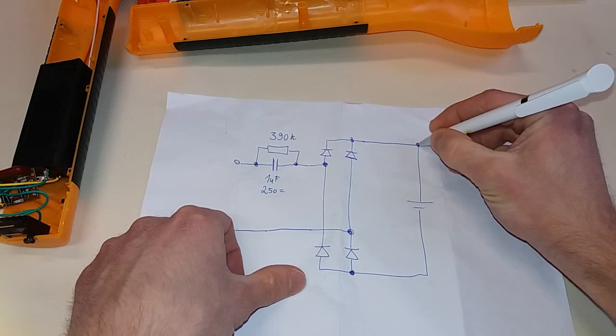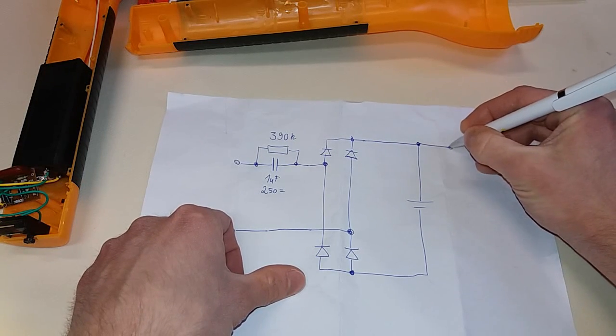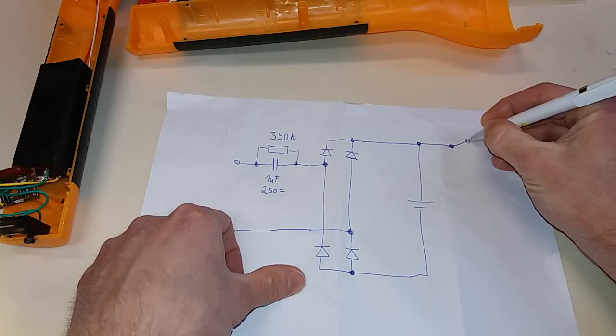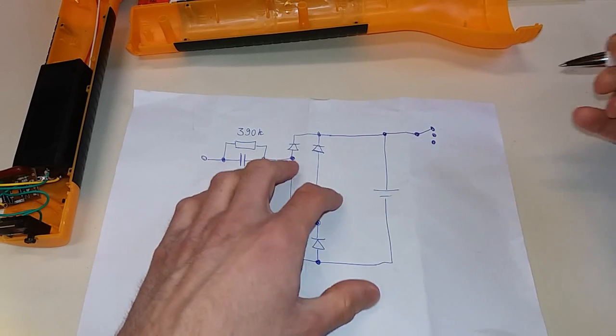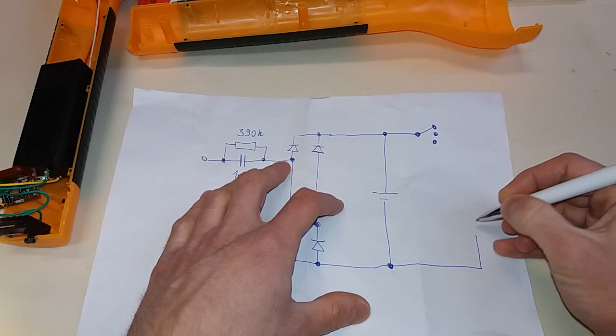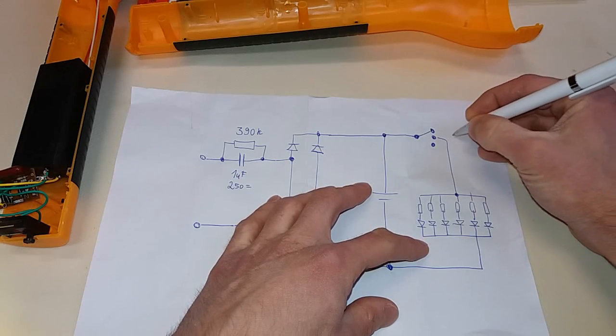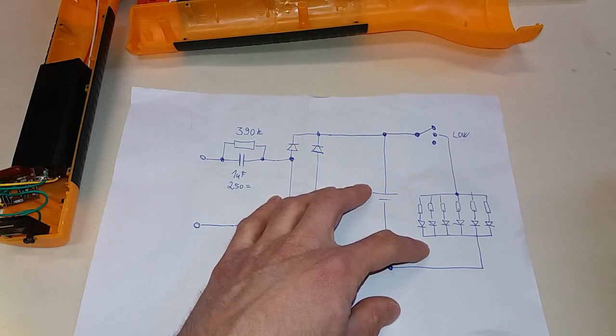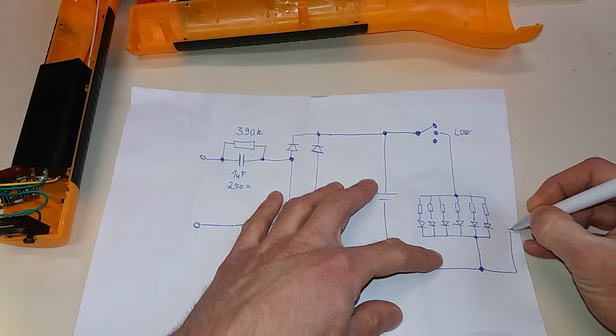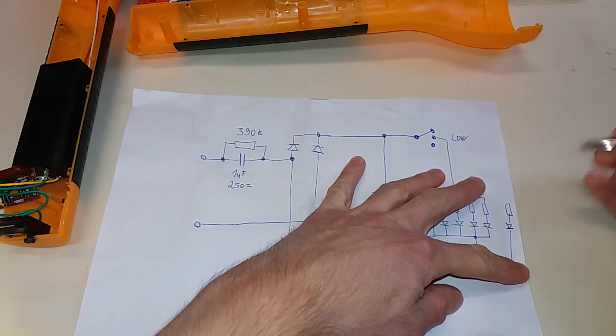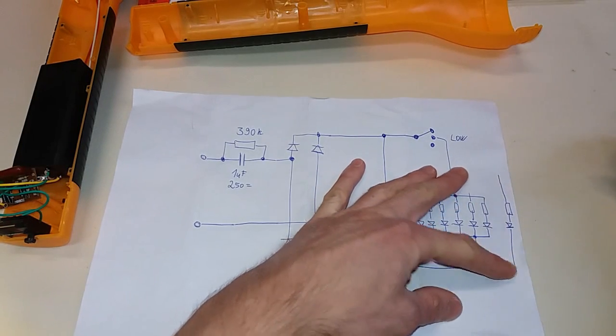Then we have the switch - it's a three position switch. There are LEDs for the low, there is another twelve LEDs, so let's just draw one twelve times this one.